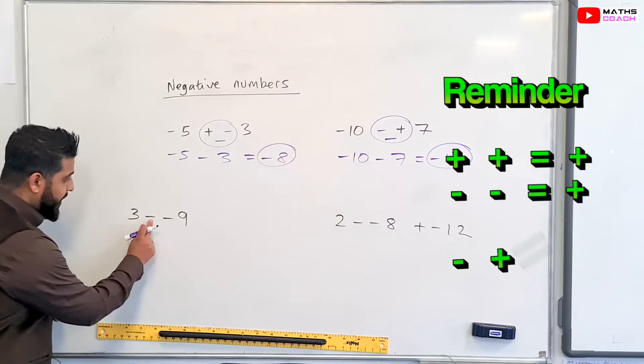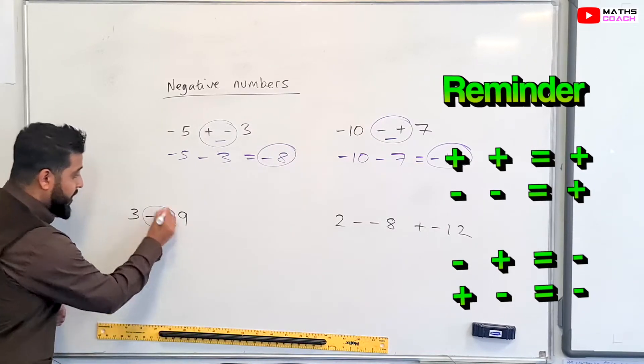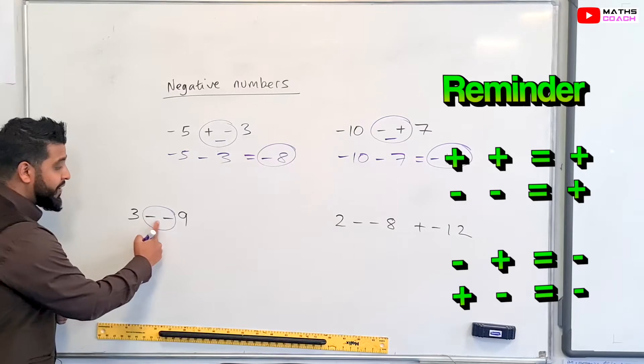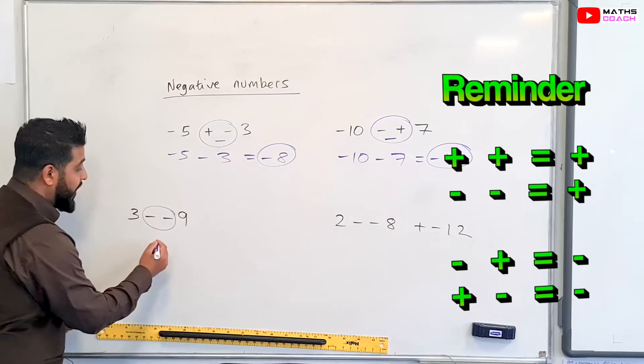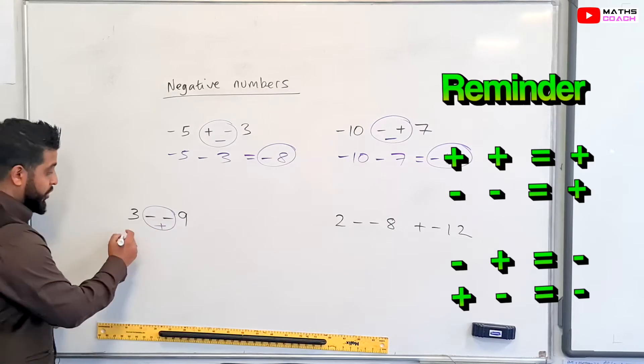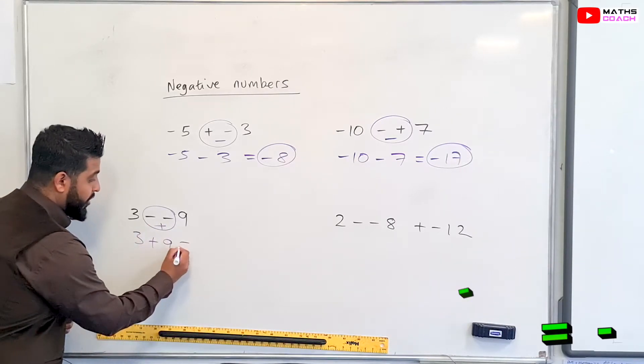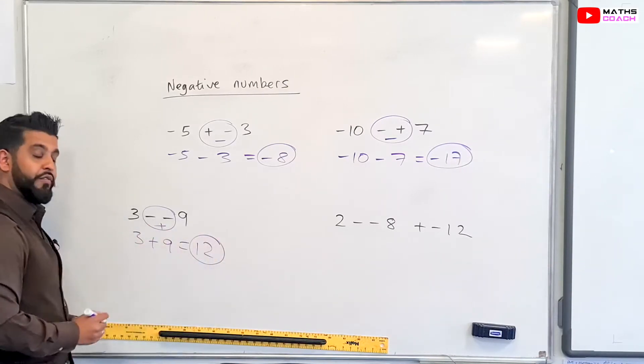Over here, we have three minus minus nine. So circling these two. Now we have two signs which are the same. So the negative or positives when they're next to each other, it's always positive. So you end up with three plus nine, which is equal to positive 12.